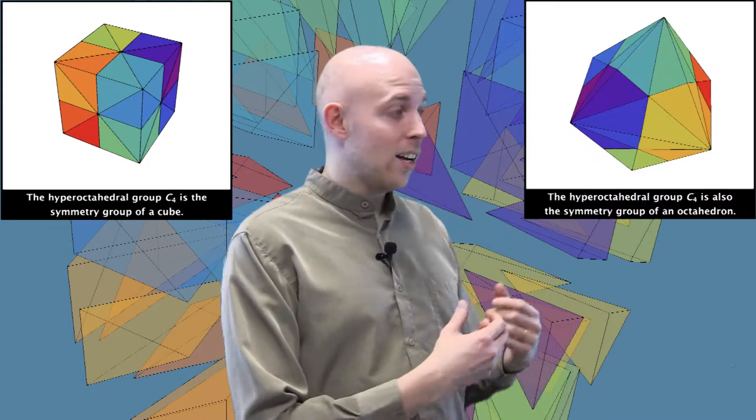A last example is the hyperoctahedral group, or hypercubical group, which is the set of reflections of an n-cube or an n-octahedron. Once again, reflections correspond to slicing the polyhedron along a plane of symmetry, and then turning it inside out through that mirror.